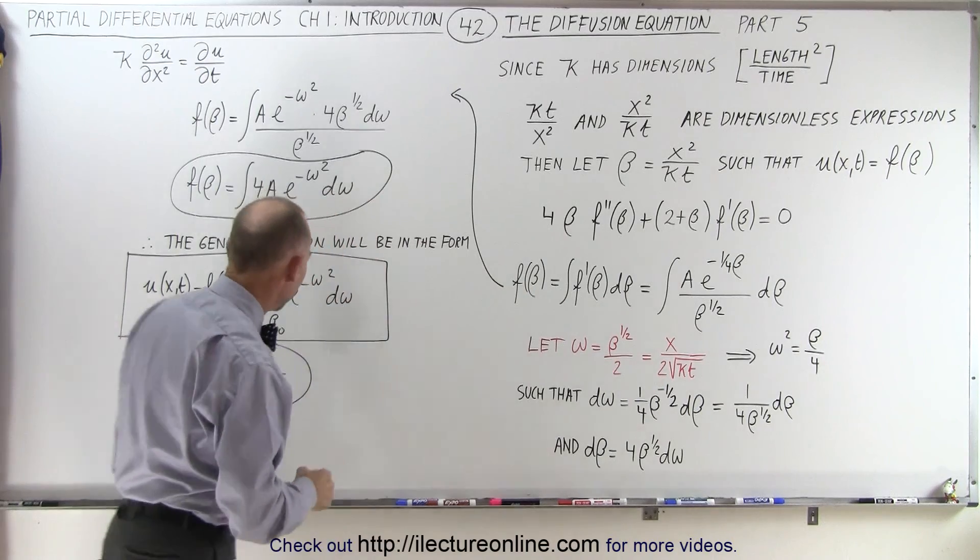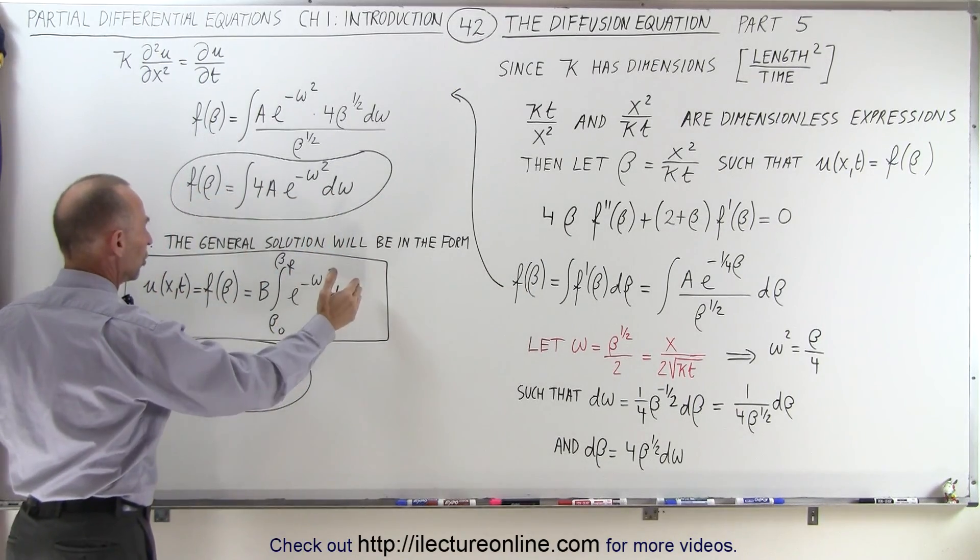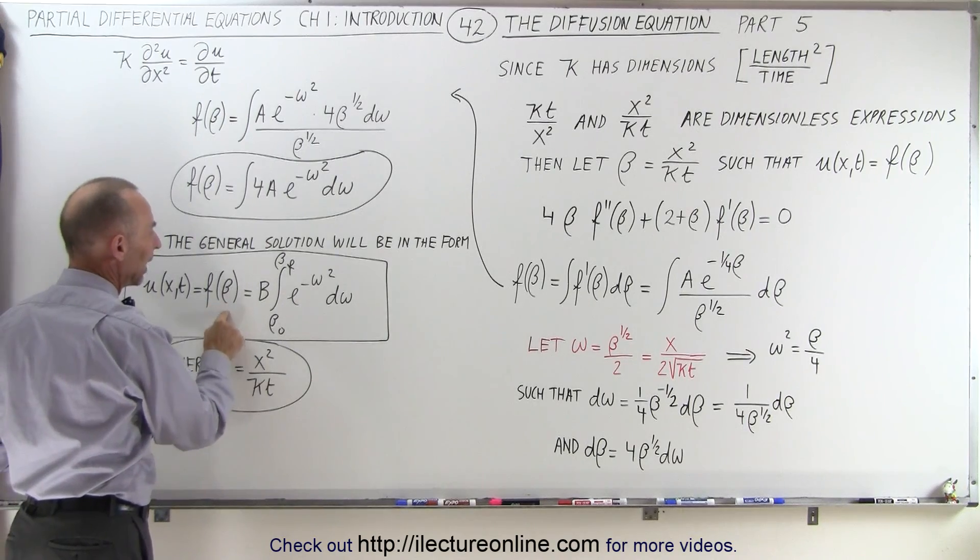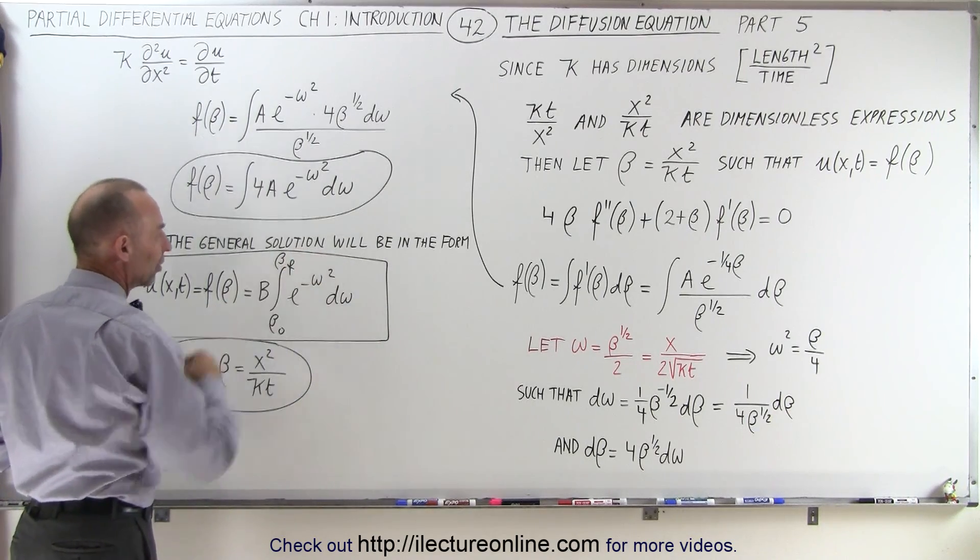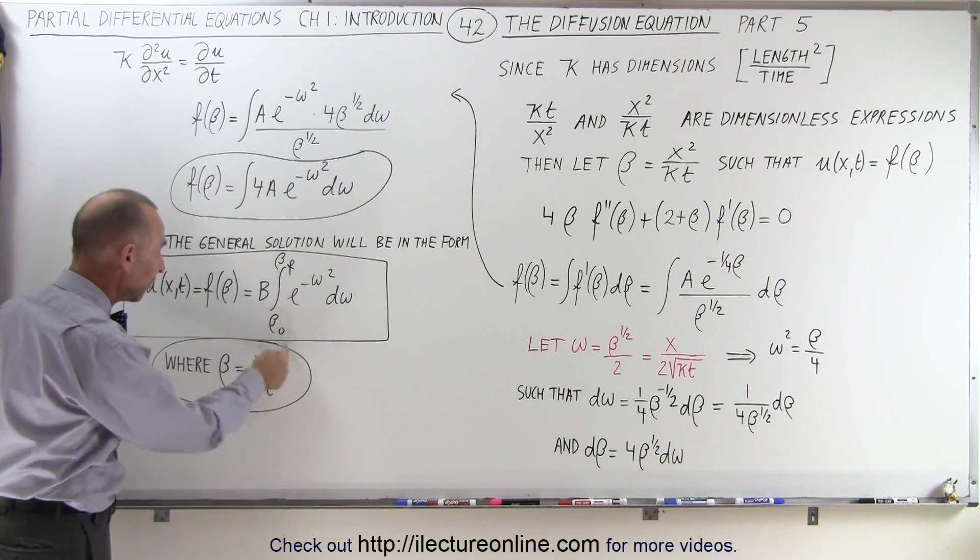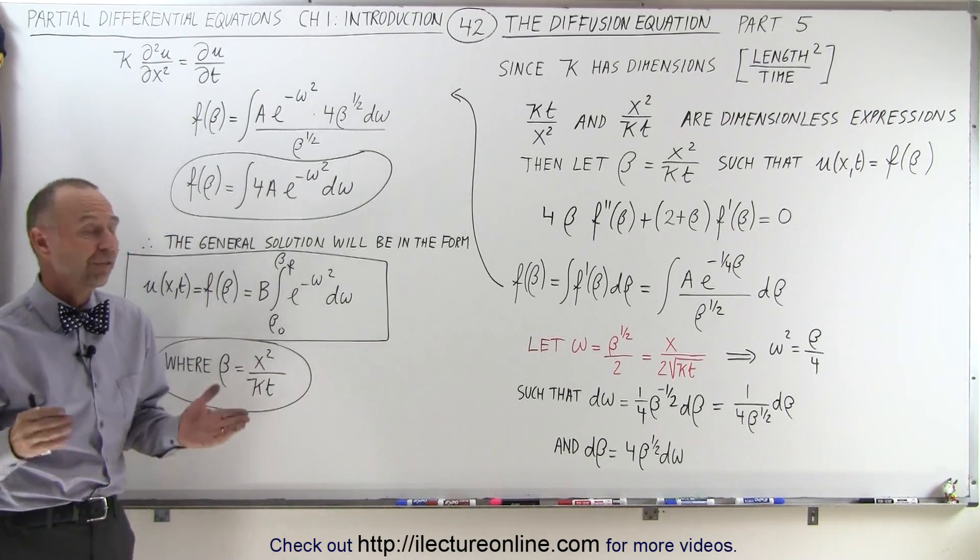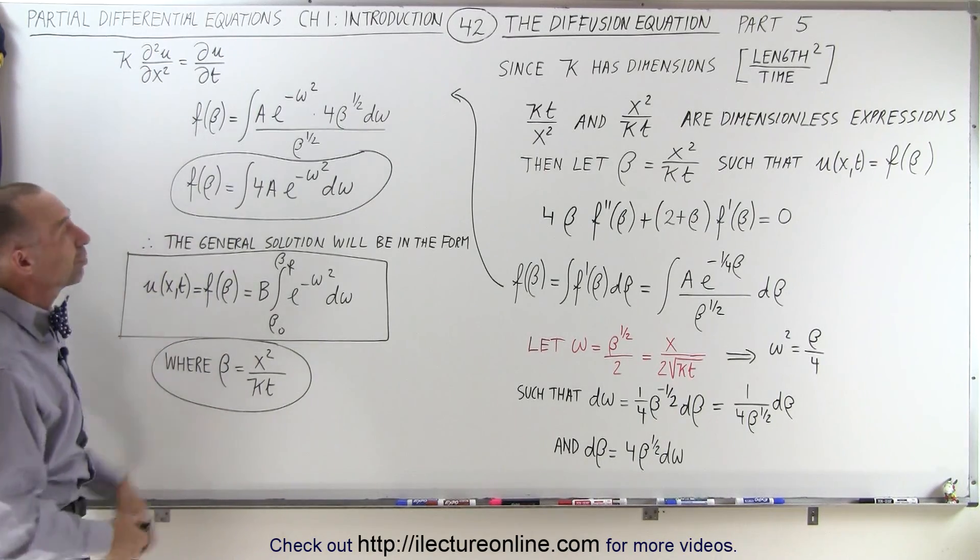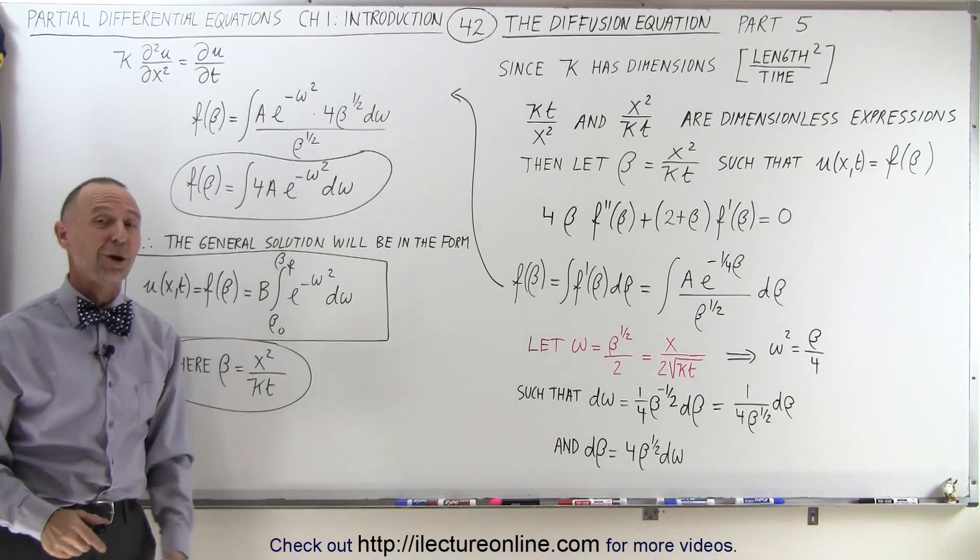And then we have our general solution of the function, which is equal to a function of beta, and that can be found by doing this integral, which is a doable integral. And then, of course, beta is defined as x squared over k times t. And that is the final general solution of our initial diffusion equation we started with a few videos ago.